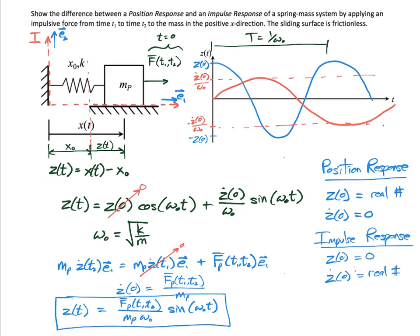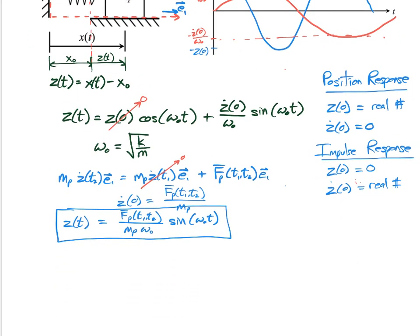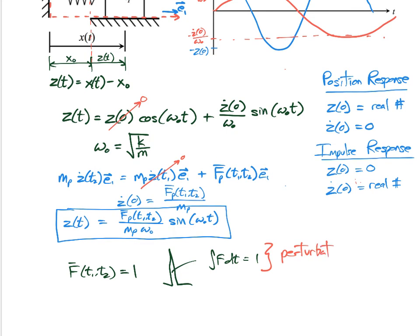One of the primary ways you're going to see this applied in future courses is with the use of a unit impulse function. A unit impulse goes from time t1 to time t2 and, just like the name says, is equal to one — meaning the integral of the force over time equals one. This unit impulse function is the classic perturbation applied to second-order systems that you'll see in future courses like system dynamics or controls.